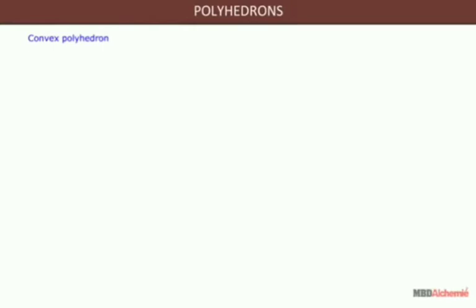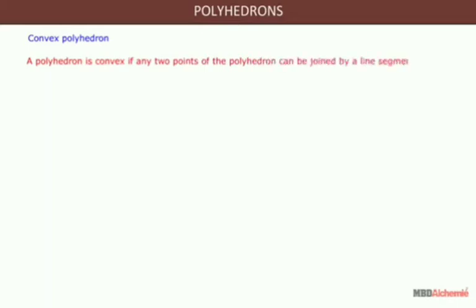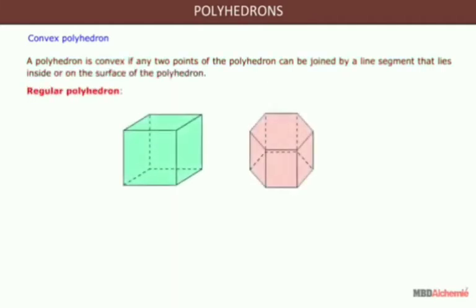Convex polyhedron: a polyhedron is convex if any two points of the polyhedron can be joined by a line segment that lies inside or on the face surface of the polyhedron. Look at here — regular polyhedron is one of the types.